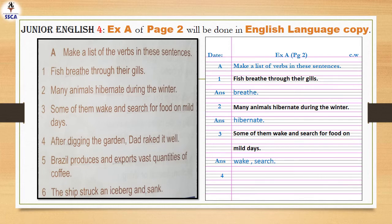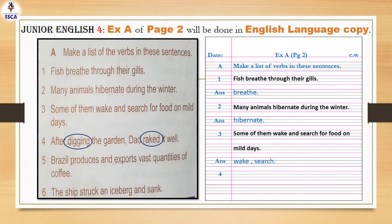I hope you understand the pattern of how to do the work in copy. I am not going to write question number four here, but you will write it in your copy the same way as questions one, two and three. Let's discuss question number 4: After digging the garden, dad raked it well. Digging means khudaii karna, and raked means jamaa karna. The answer is: digging and raked. Follow the same pattern — write down the question and then the answer.